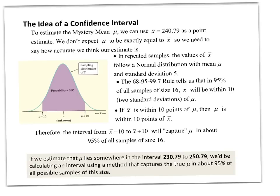So in this mystery mean, we could use the value 240.79 as a point estimate. In other words, we're going to use that as a way to estimate what the mystery mean was. We don't expect it to be exactly equal to that, so we need to say how accurate we think our estimate is. And so the idea is that we can use, for example, a 95% confidence interval by going two standard deviations above that value and two standard deviations below that value